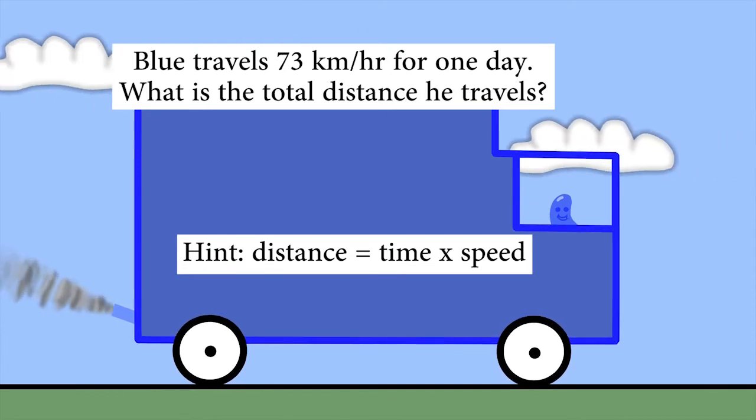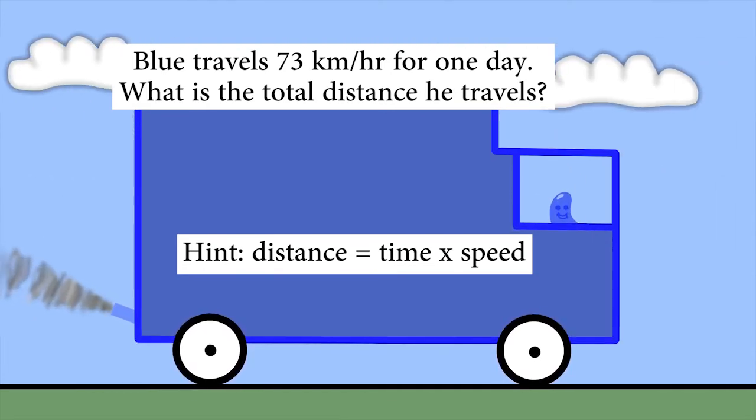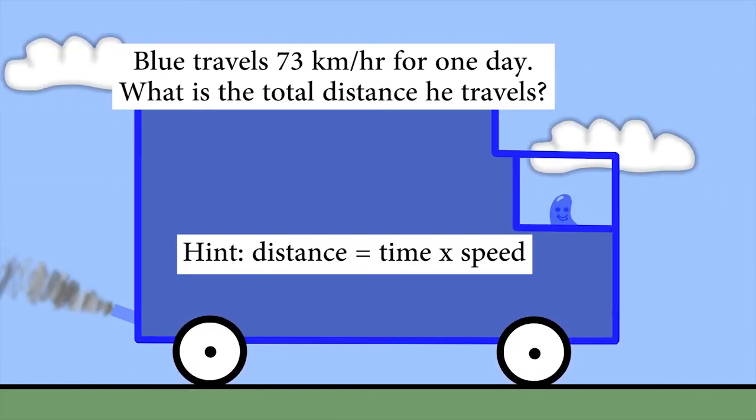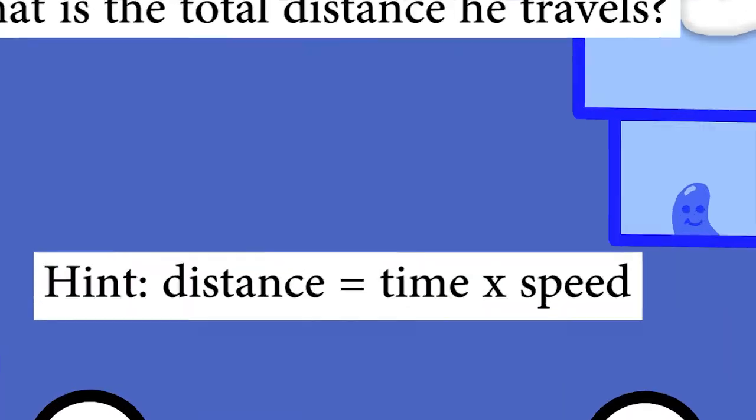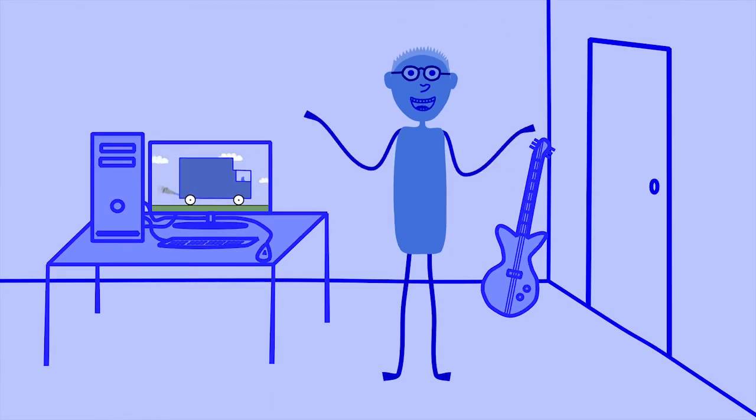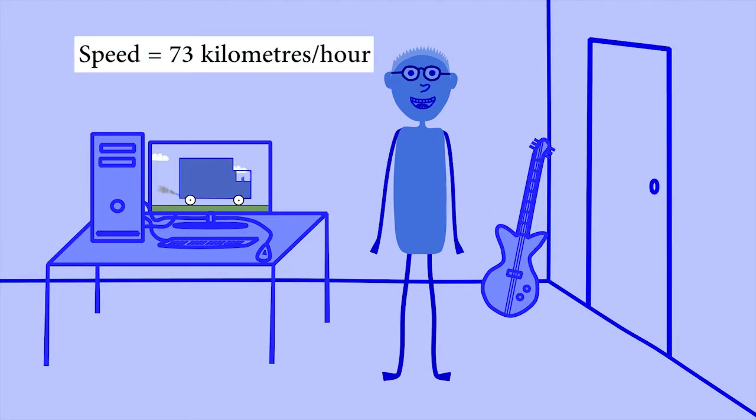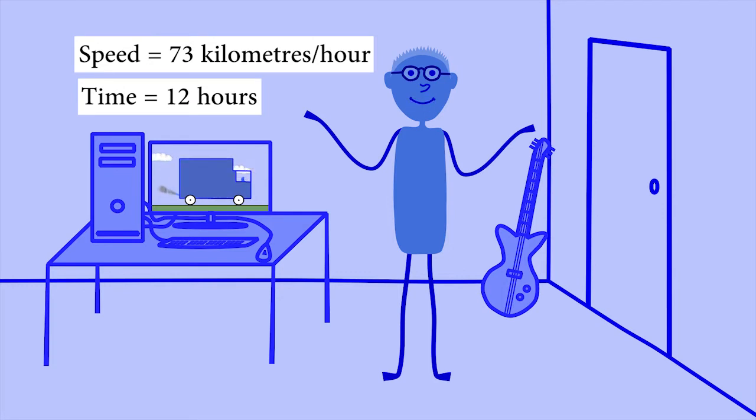The distance I travel equals the length of time I spend travelling multiplied by my speed. Let's see if we can work out how far Blue goes in his truck. His speed is 73 kilometres per hour. He travels for one day, which is 12 hours. Now, how do we figure out the total distance he covers in 12 hours?